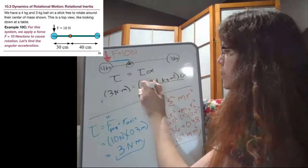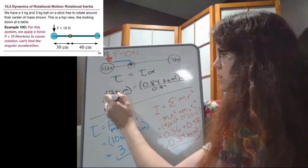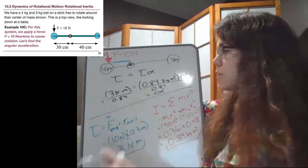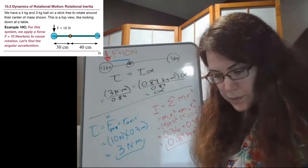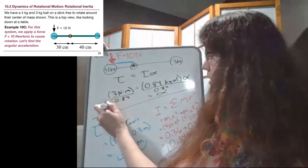So we can divide everything by the 0.84 and the relevant units. And so what we will get is 3.57.